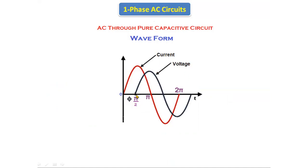If we observe the voltage waveform, it is starting from 90 degrees. The positive half cycle is ending beyond 180 degrees and the negative half cycle is ending beyond 2 pi degrees. So it is clear that there is a phase difference between the voltage waveform and the current waveform.